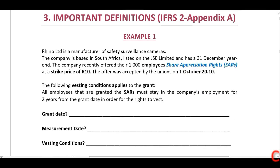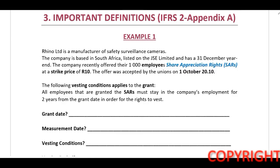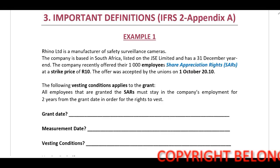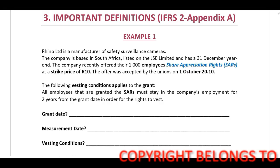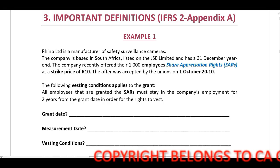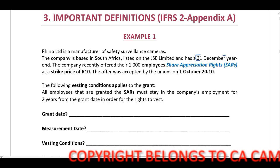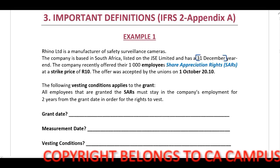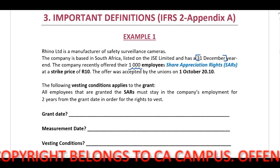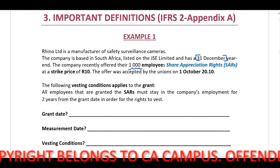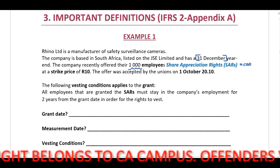I have a few important definitions that I'm going to explain by means of an example. Rhino Limited is a manufacturer of safety surveillance cameras. The company is based in South Africa, listed on the JSE Limited, and has a 31 December year-end. The company recently offered ten thousand employees share appreciation rights.